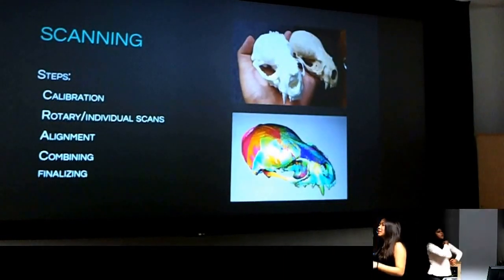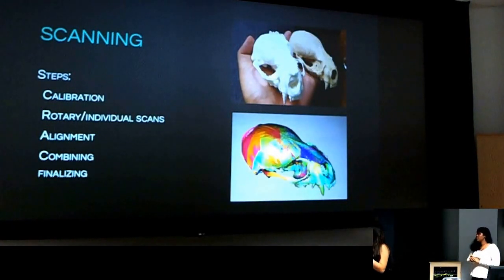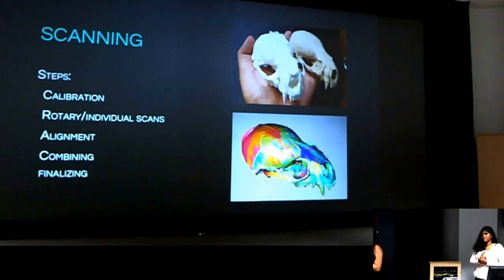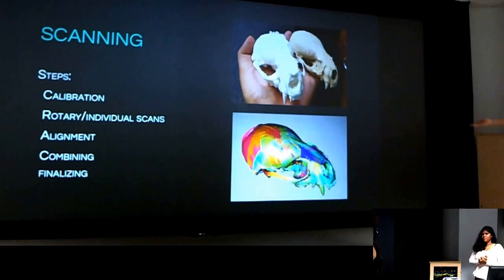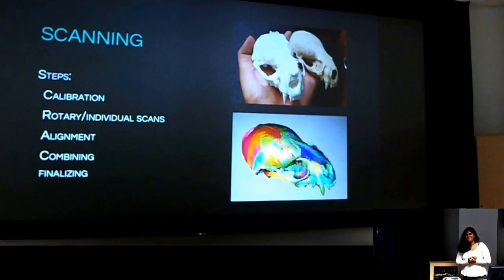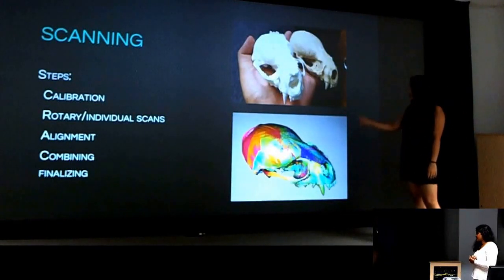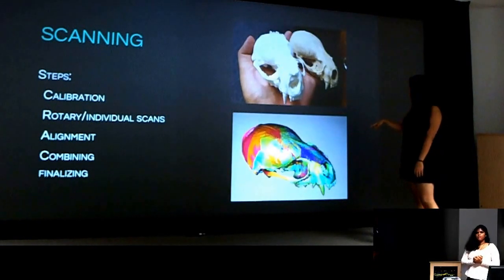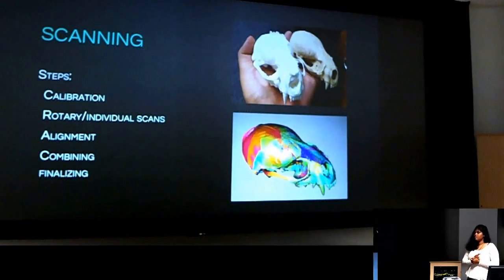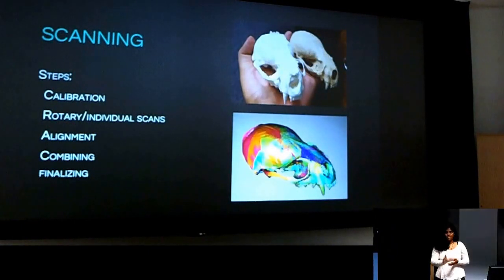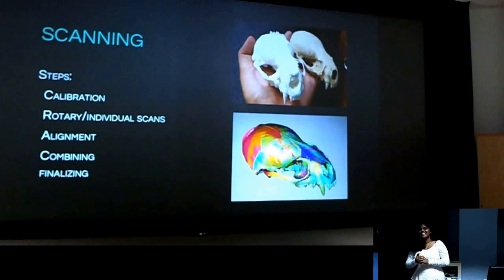After getting all the bones clean, it was time to scan them. There were five steps. First, calibrate the scanner to ensure the most accurate representation. Next, we did either rotary or individual scans — the rotary scan took a 360-degree scan of the skull first, and the individual scans are single stills layered on top of each other in the alignment process. You can see the different colors representing different scans before combining. After aligning, we combined them all into one file and finalized it — filling in gaps the scanner couldn't pick up. Finally, we took the file and had the skull 3D printed, which was pretty cool.